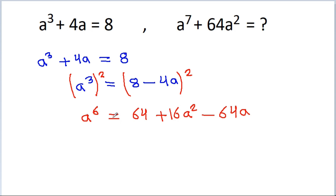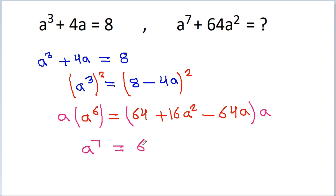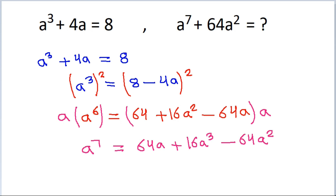So, if we multiply both sides by a, then we can get a to the power 7 is equal to 64a plus 16a cubed minus 64a squared.